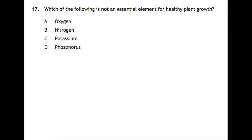Which of the following is not an essential element for healthy plant growth? This is coming from your fertilizer topic, where you would look at N, P and K. So N is nitrogen, P is phosphorus, and K is potassium. The only element here that is not essential for healthy plant growth is oxygen.